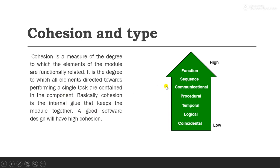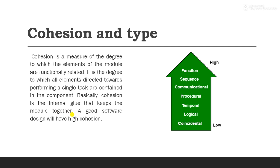Cohesion means the degree to which the elements of a module are functionally related. We are talking about only one module in cohesion, but in coupling we are talking about two modules. Cohesion is the internal glue that helps keep the elements of each module together. One module may have different types of elements — for example, classes and their objects, functions, data types, variables, and data structures. All of these are elements of a single module.